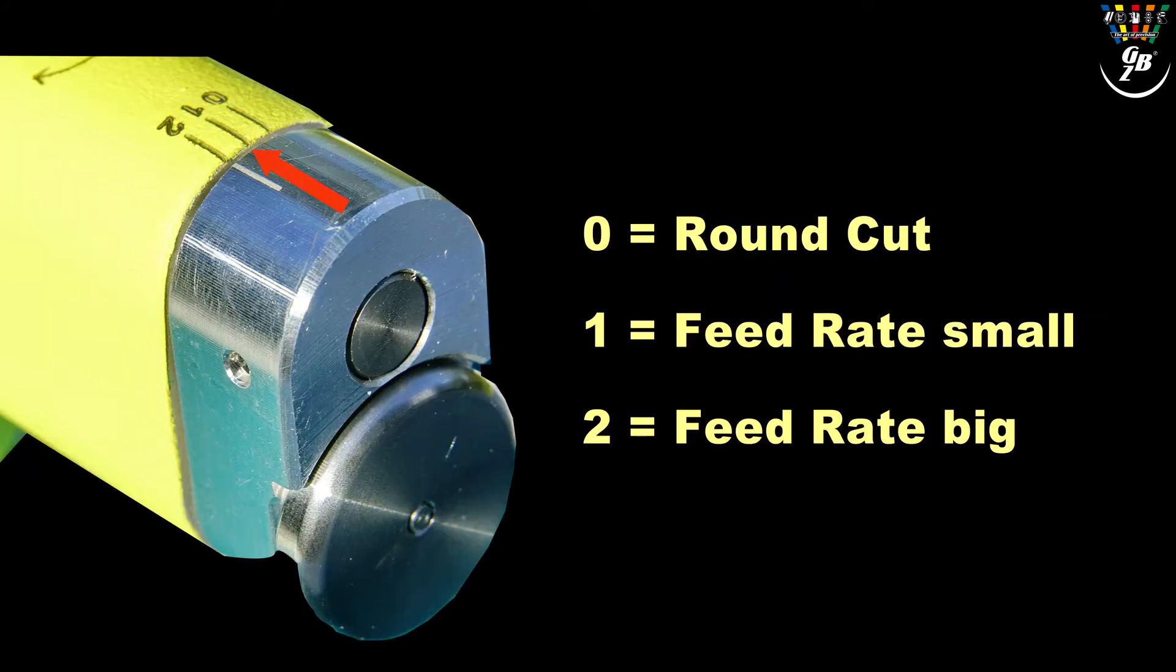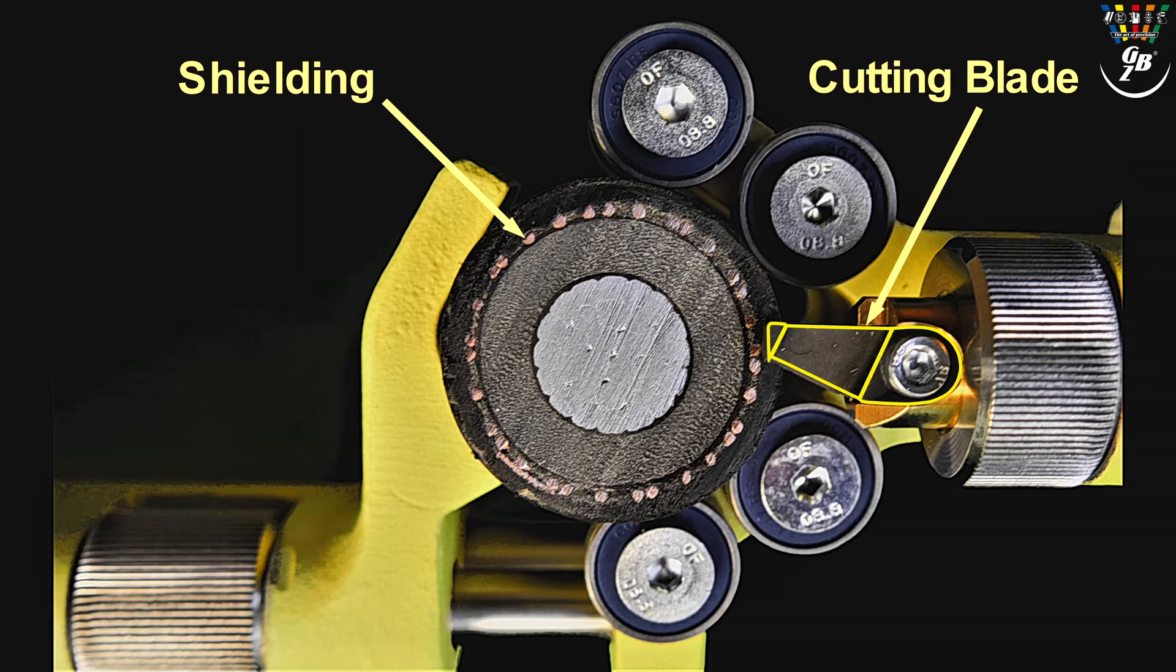We have three options for the feeding rate setting: 0, 1 and 2. For this cable diameter we set it to 1. When the tool fits optimally the cutting depth will be adjusted. Attention! The shielding wires must not be damaged.